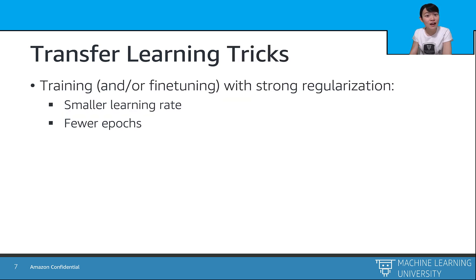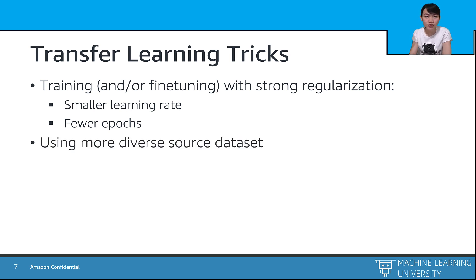Here are several tricks for transfer learning. First, training or fine-tuning on the target dataset proceeds normally but with strong regularization. That means we set a small learning rate and a few epochs for hyperparameters. Second, make sure the source dataset is more complex and more diverse than the target dataset. If we pre-train on that and then fine-tune on the less complicated target dataset, our model will transfer and learn quickly from the existing features.